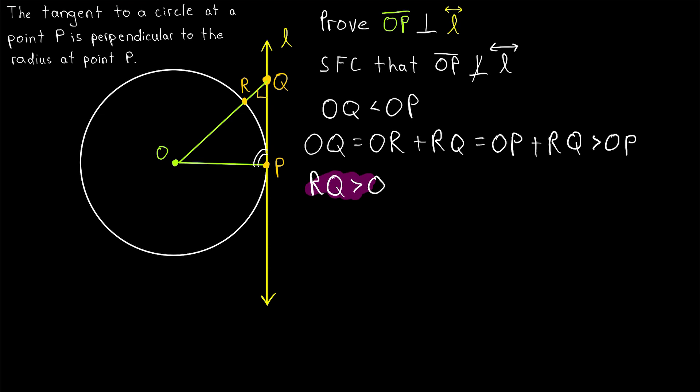Why is RQ greater than zero? Well, it certainly can't be negative, because the length of a segment can't be negative. But it also can't be zero, because that would mean that the point Q on our tangent line is actually here on the circle at point R. That's what it would mean if this segment had a length of zero. But that can't be, because this is a tangent line, and it's not tangent to the circle at point R. It's tangent to the circle at point P, down here. Remember, the tangent only intersects the circle once. So, this segment definitely doesn't have length zero either, which means RQ is definitely positive.